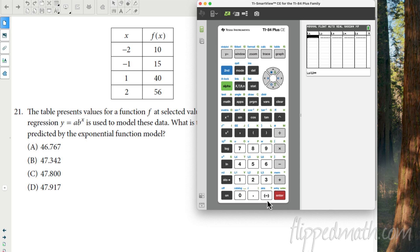So we're going to go negative 2 and then negative 1 and then 1 and then 2. And then we got to put the Y values in. So we're going to go over to L2. We got 10, 15, 40, and 56. Easy peasy. Now we have to do our regression. So after we type that in, I always like to quit. Second quit.